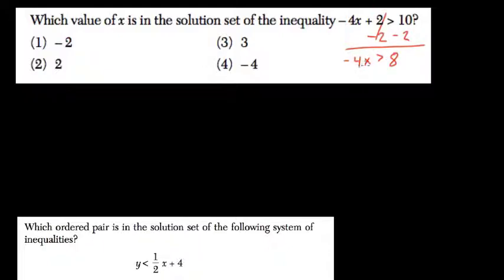And now we get negative 4x is greater than 8. To solve it, we divide both sides by negative 4, but that's where things get a little bit different. Now what's going to happen is instead of x being greater than negative 2, we have x is less than negative 2.